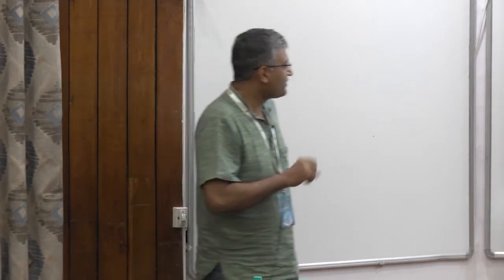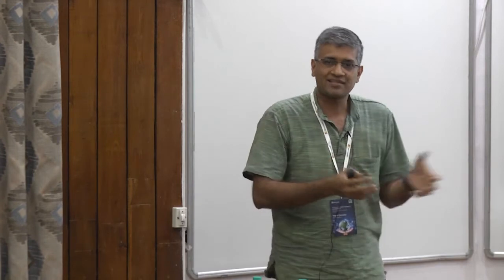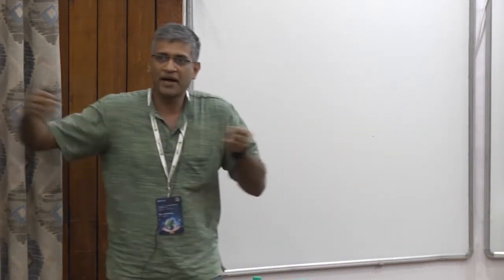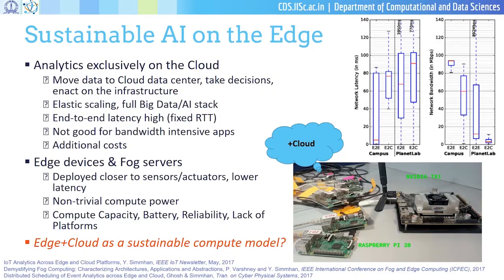Edge devices also have challenges: they're not elastic like cloud virtual machines, they have reduced capacity, battery availability, and reliability issues to deal with. But our broad question was: if you combine edge devices with cloud devices, can you do more than just using cloud resources?